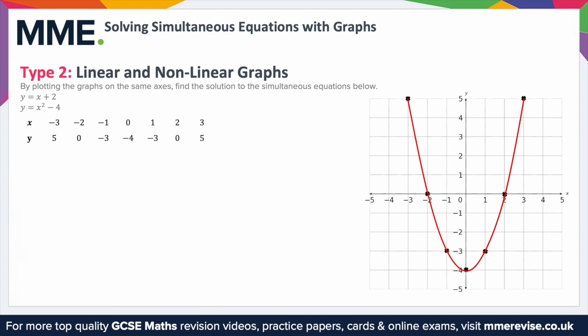What I would recommend is picking two points. A nice easy one is the y-intercept because you can read it straight off. That's the plus 2 on the end. So that goes there. Then, find another point.